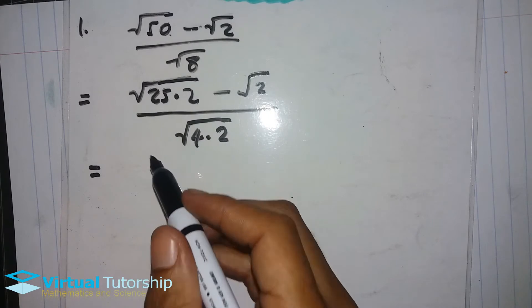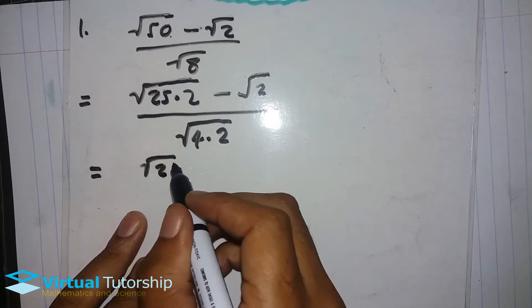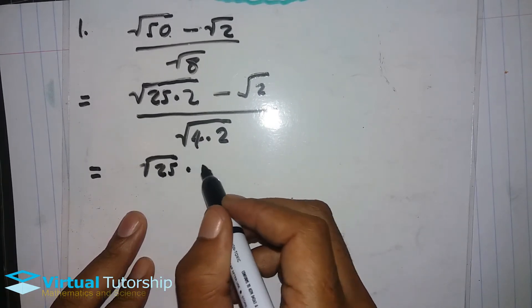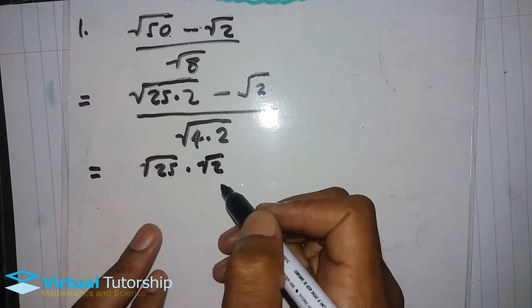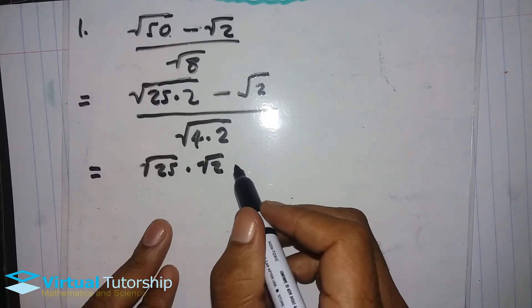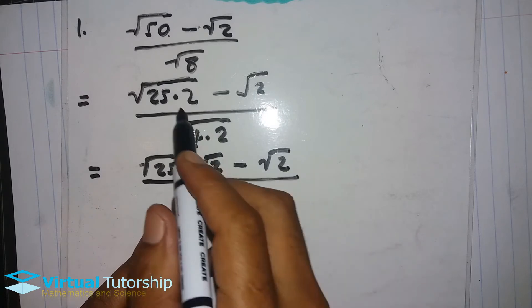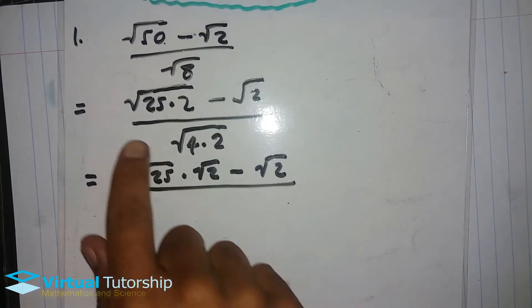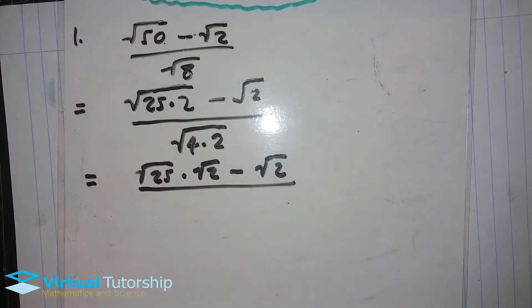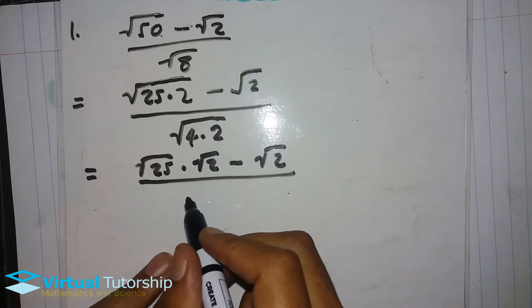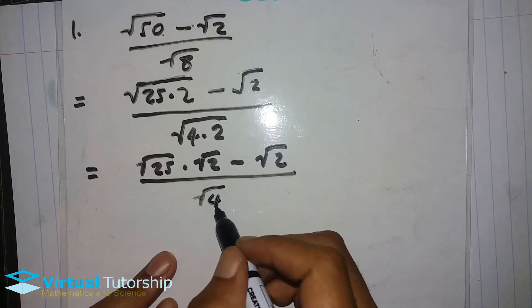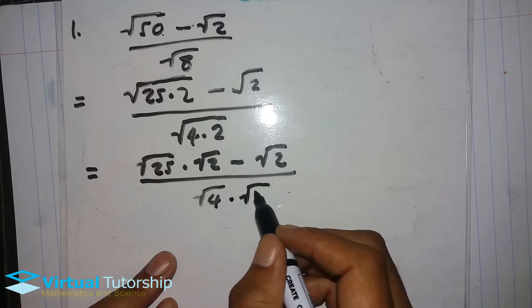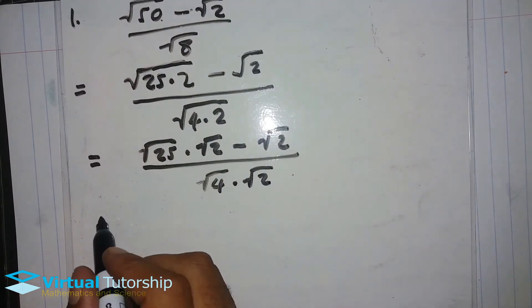In this example, it's equal to basically the square root of 25 times the square root of 2 minus 2. So if we break 50, each number becomes a separate root. So it's going to be square root of 4 times square root of 2.